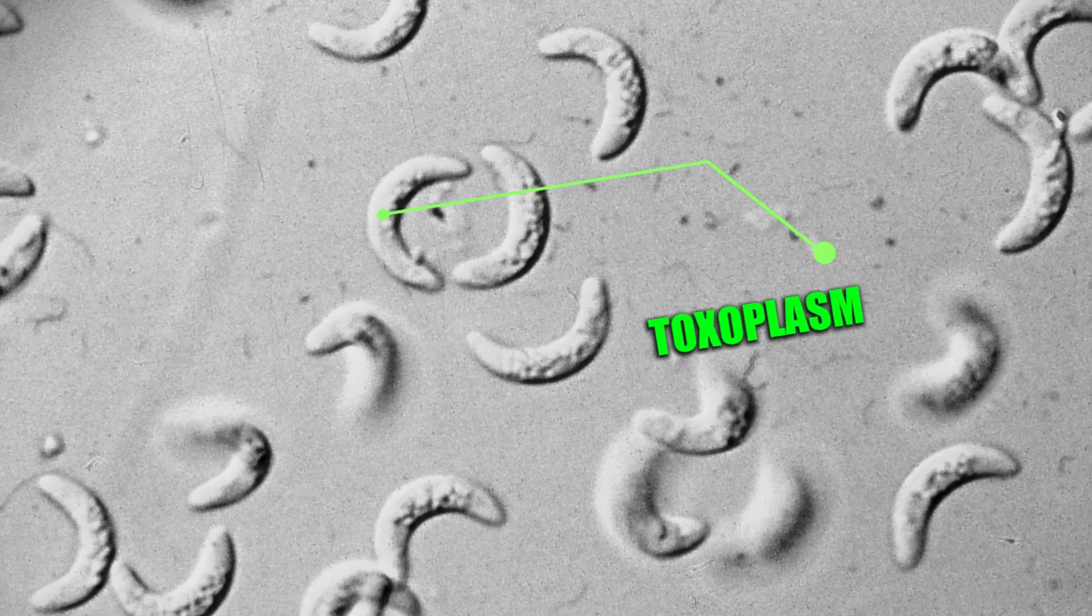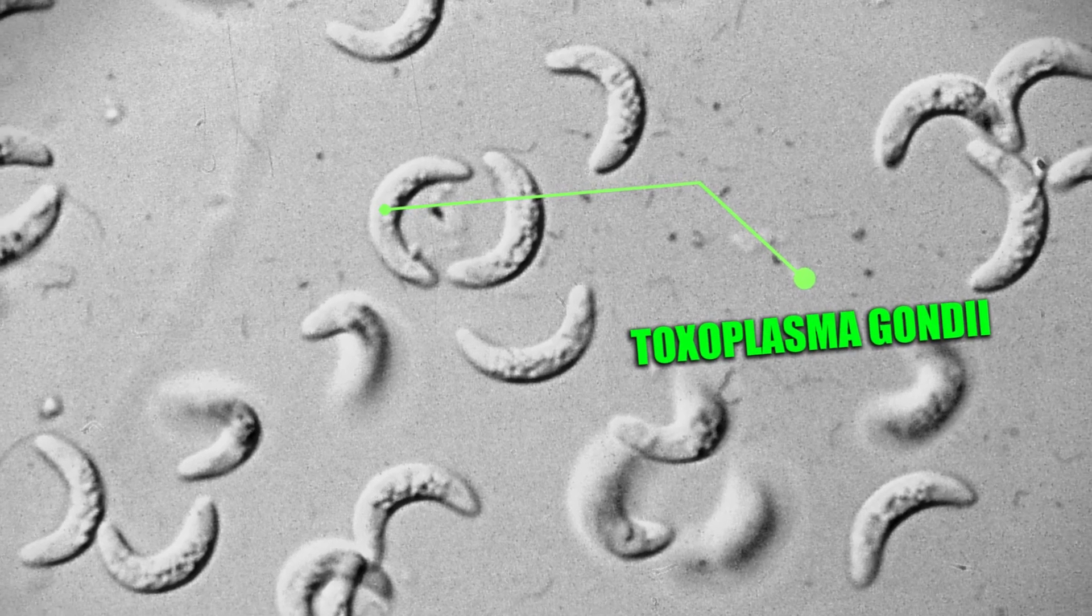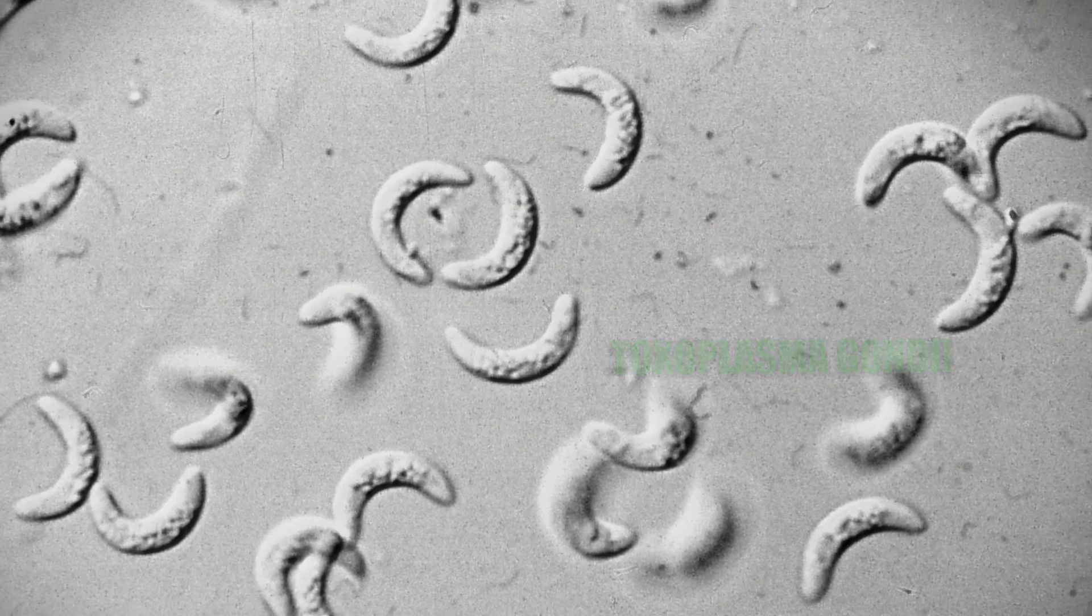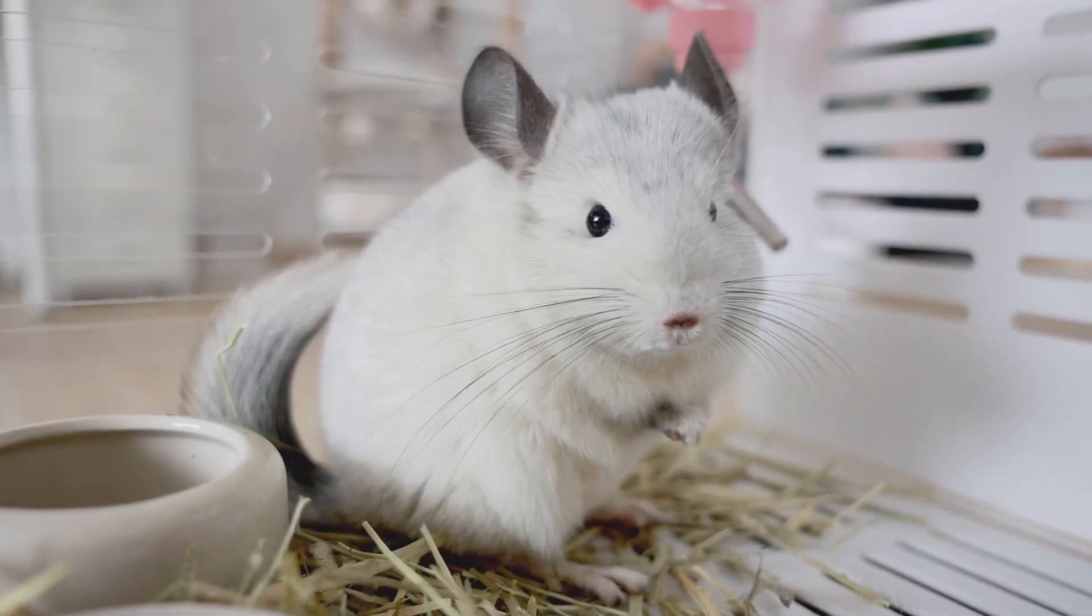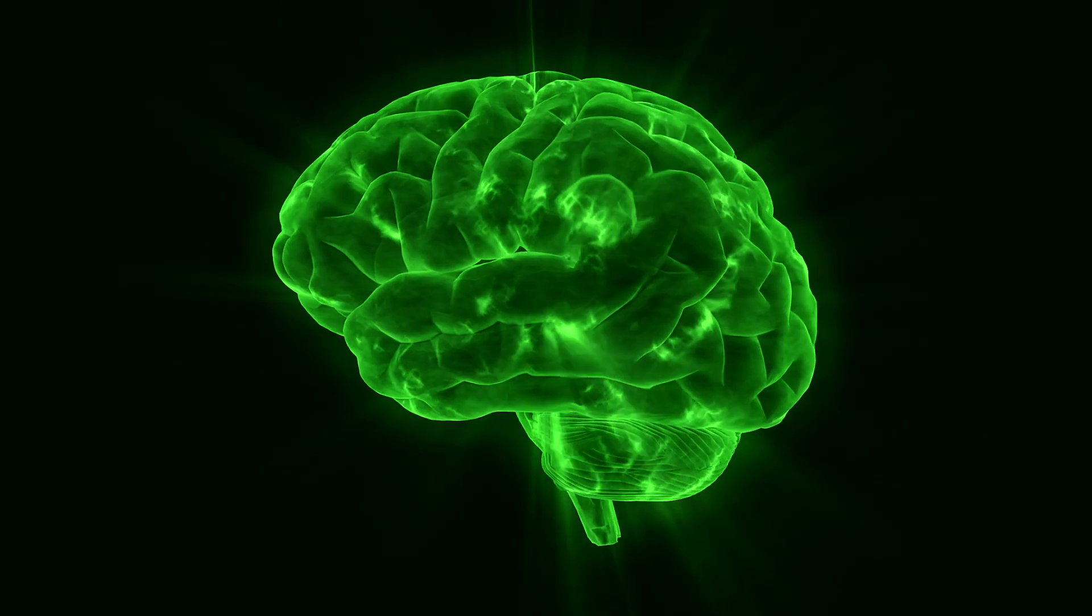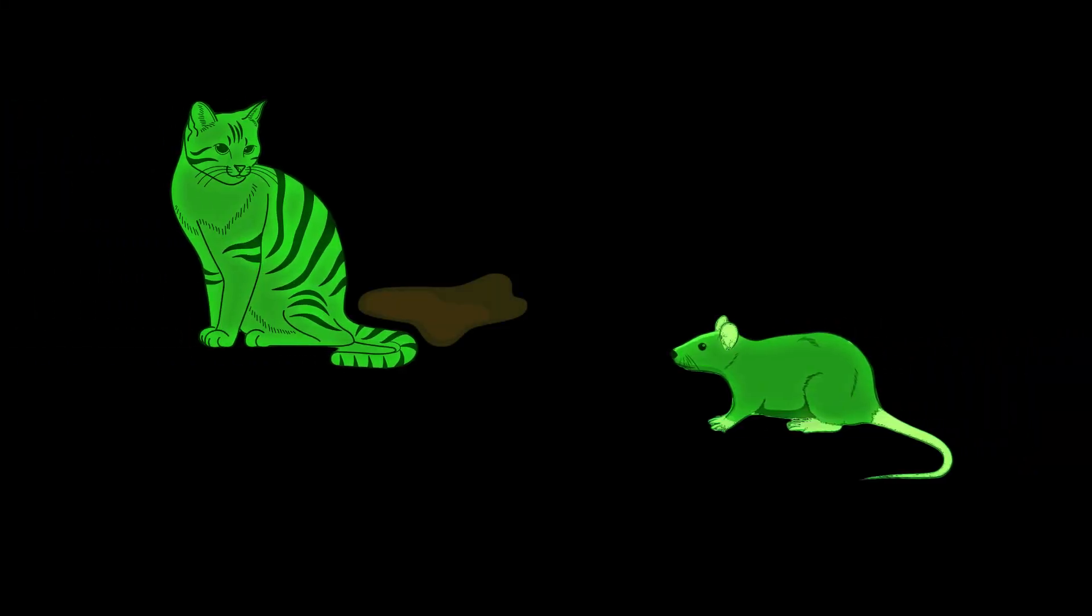A single-celled parasite called Toxoplasma gondii learned how to hijack behavior from the inside. It infects rodents like mice and rats, but instead of just making them sick, it changes how they think. Infected rodents lose their natural fear of cats. In fact, they start to feel drawn to the smell of cat urine, a scent they would normally avoid at all costs.